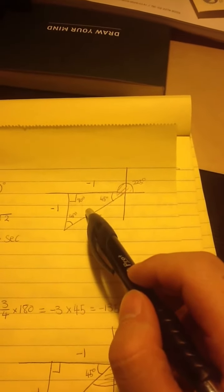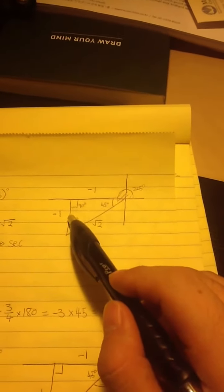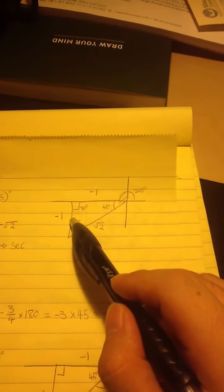And here, because they are in the third quadrant, the adjacent, which is the x value, is negative 1, and the opposite, which is the y value, is negative 1.